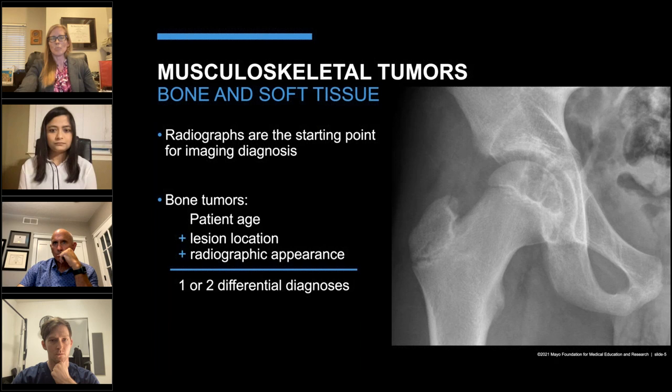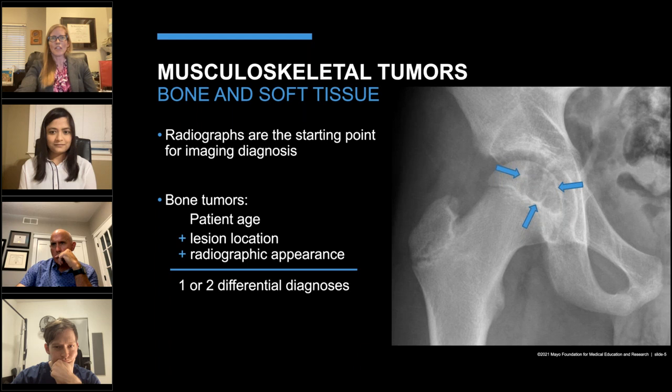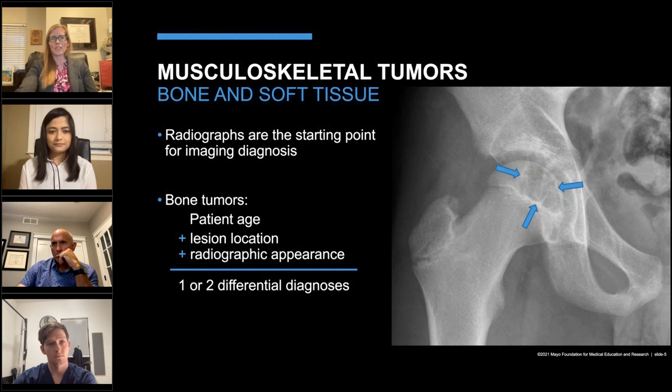For example, looking at this lesion: first, it's in a skeletally immature patient; second, it's in the epiphysis; and third, it's lucent and geographic with faint internal mineralization. That combination — the general age, the epiphyseal location, and the radiographic characteristics — allows us to favor chondroblastoma over other possible diagnoses.